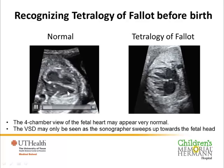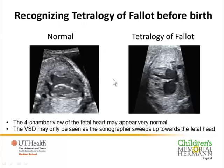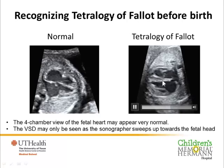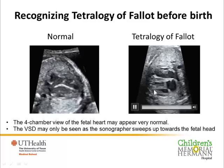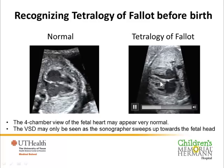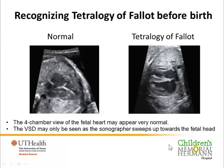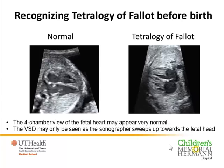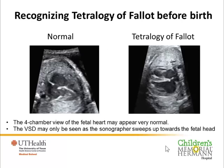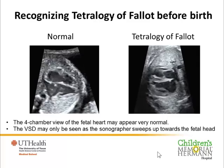If we look at the four-chamber view in a case of Tetralogy of Fallot, it also shares these characteristics. There is a left side and a right side — the red and the blue sides — and there appears to be a solid wall of muscle separating them, just as seen in the normal heart.